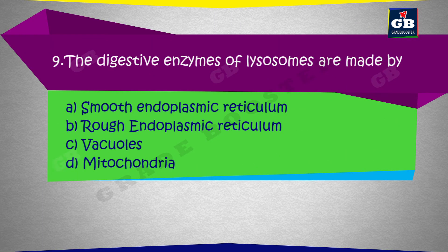The digestive enzymes of lysosomes are made by: a) smooth endoplasmic reticulum, b) rough endoplasmic reticulum, c) vacuoles, d) mitochondria.